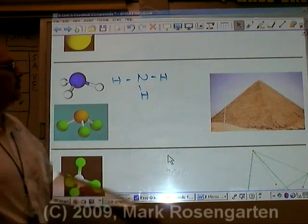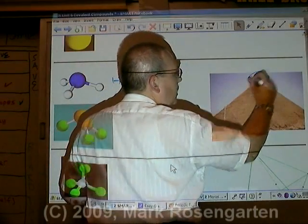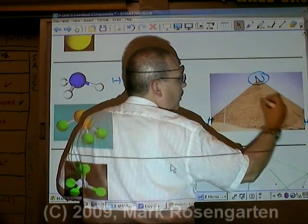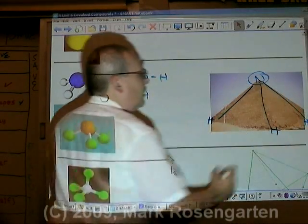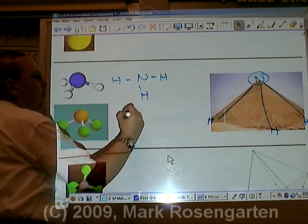You can see it better in the three-dimensional shot here, but the molecule is shaped somewhat like a pyramid, where you have nitrogen up here and a hydrogen, a hydrogen, and over on that corner another hydrogen. Therefore, the name of this particular shape is called pyramidal.